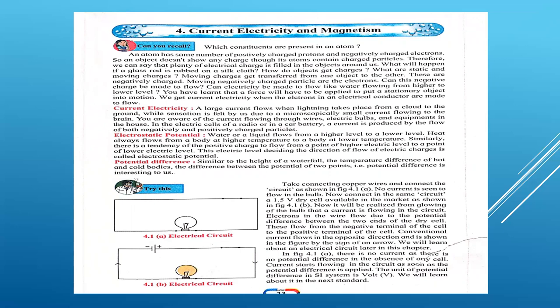As you know, electrons are negatively charged and protons are positively charged. Then what about neutrons? Neutrons have no charge. That is why we say that the atom of any element always has no charge.